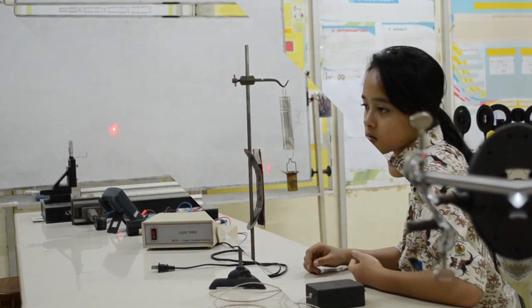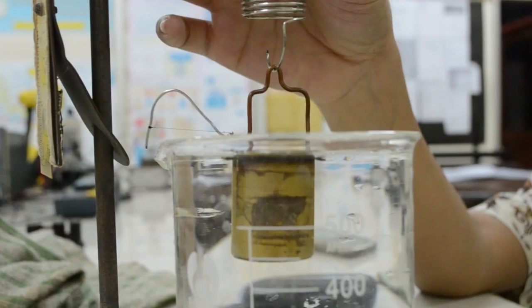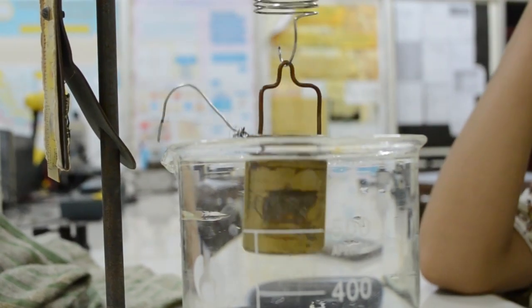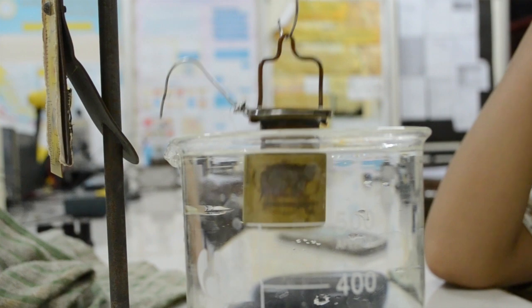These are the results of my work. The first graph shows the linear equation from linear regression used to calculate the spring constant. Similarly, the second graph determines the spring constant for the second spring. These two graphs correspond to when the light mass and the heavier mass oscillate on the first spring in water as the absorber medium.